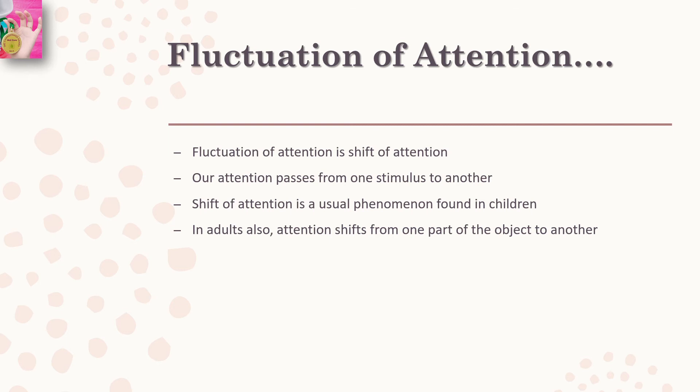Closely related to fluctuation is shift of attention. In shift of attention, attention passes from one stimulus to another stimulus, or from one aspect of a stimulus to another aspect of the stimulus. Shift of attention is a common phenomenon found especially in children, who generally lack the ability to concentrate. In adults as well, attention shifts from one part of an object to another part.